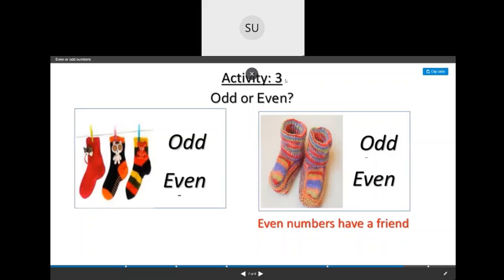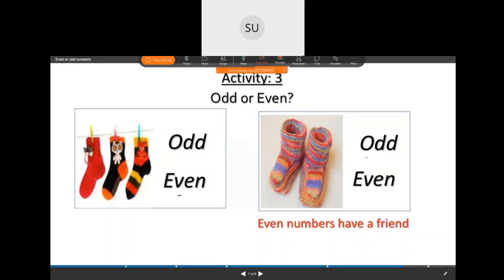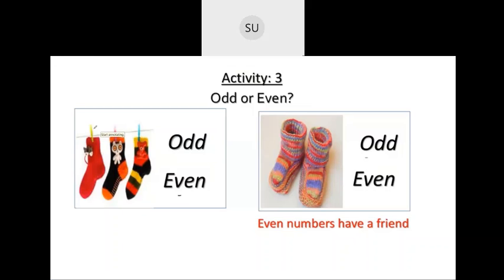Here they ask if the number of socks is odd or even. In the first picture we have 1, 2, 3 socks — 3 is an odd number, so we select odd. Then we have 2 socks. Even numbers have a friend, and these two socks are paired, so 2 is an even number. In the third image, one sock has a friend but one is left alone without a friend, so it is odd.